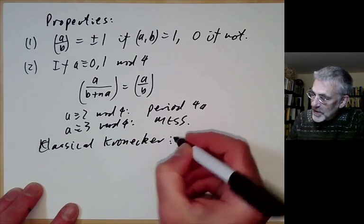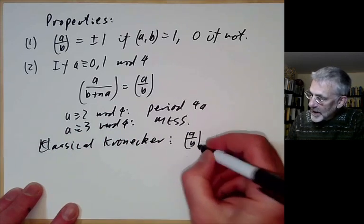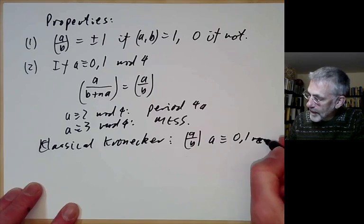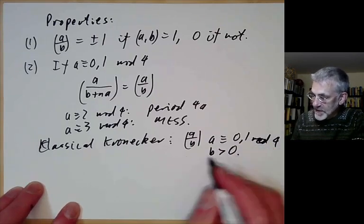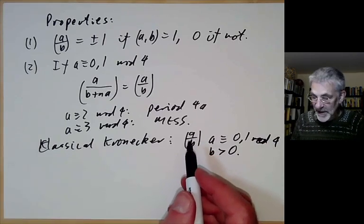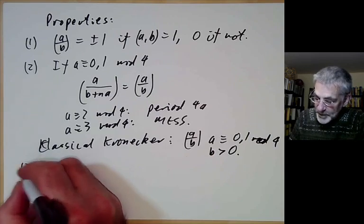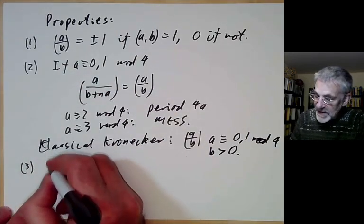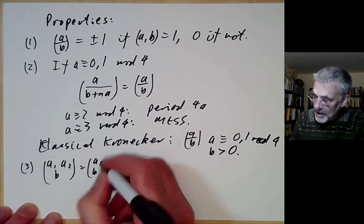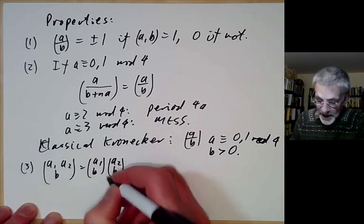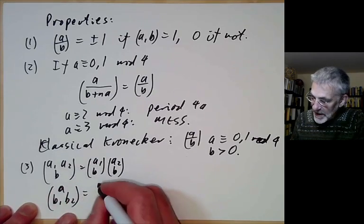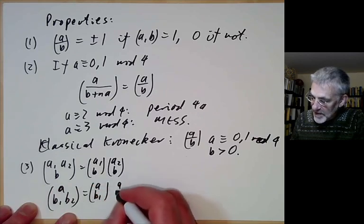For this reason, the classical Kronecker symbol was sometimes only defined when a ≡ 0 or 1 mod 4 and b > 0, which avoids some complications. The Kronecker symbol is also multiplicative: (a₁a₂/b) = (a₁/b)(a₂/b) and (a/b₁b₂) = (a/b₁)(a/b₂).